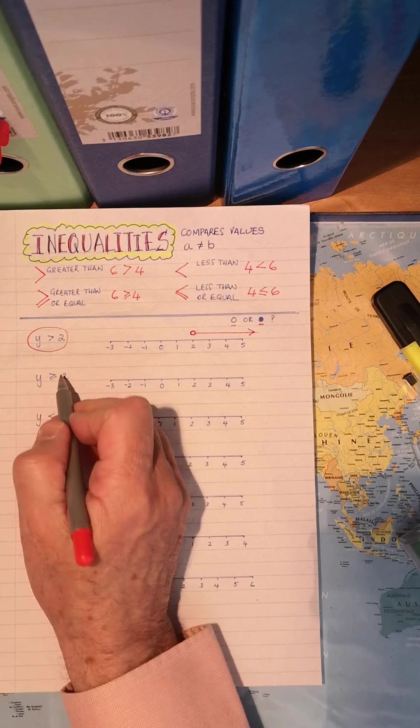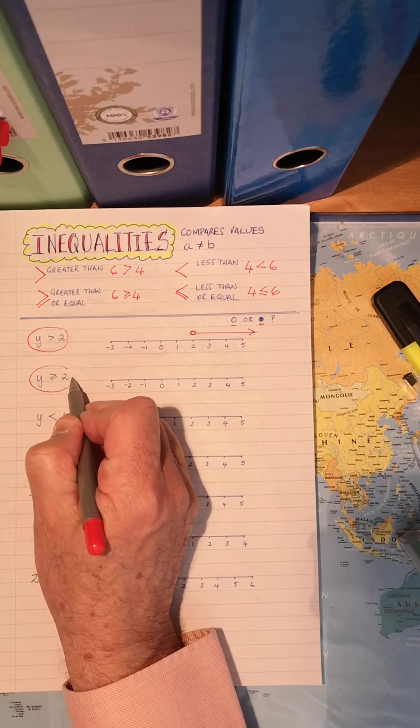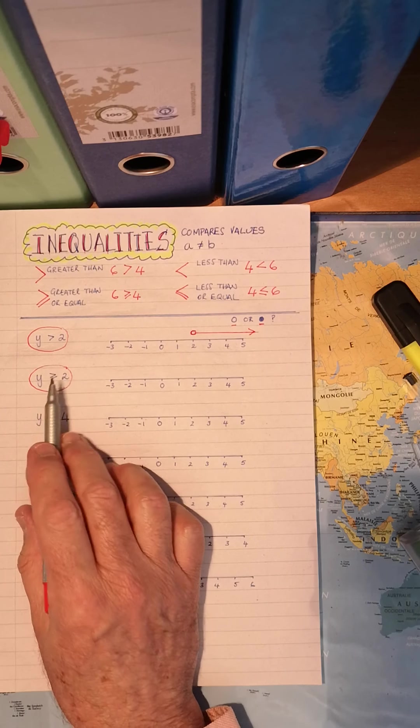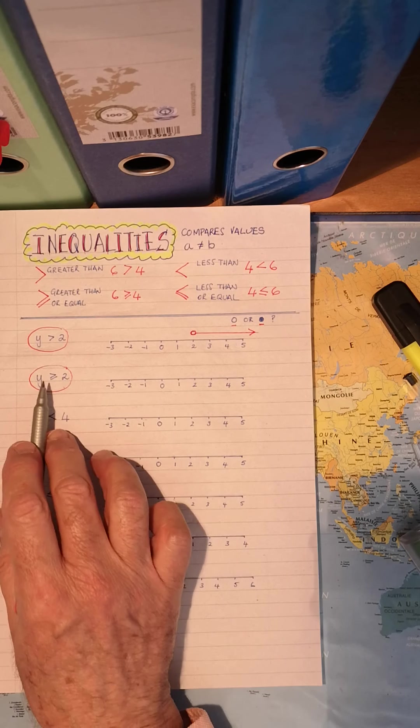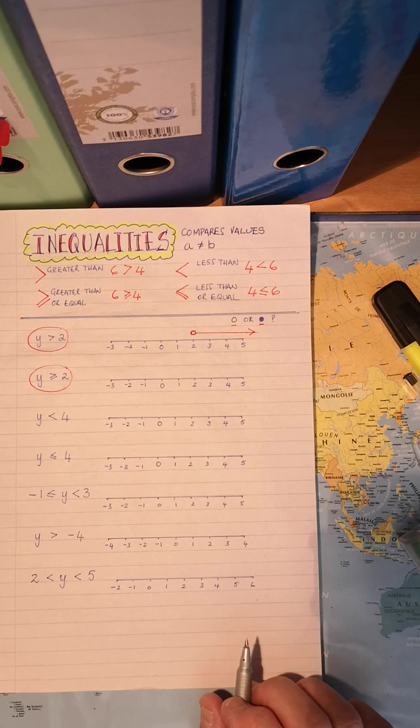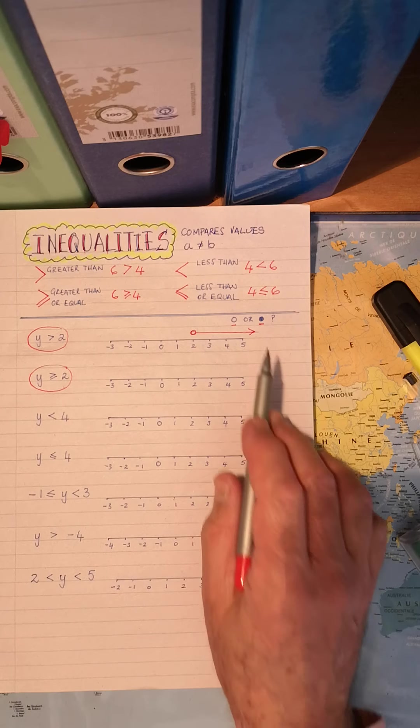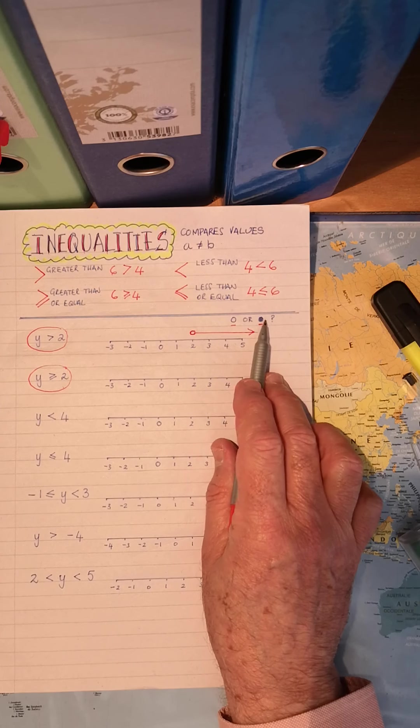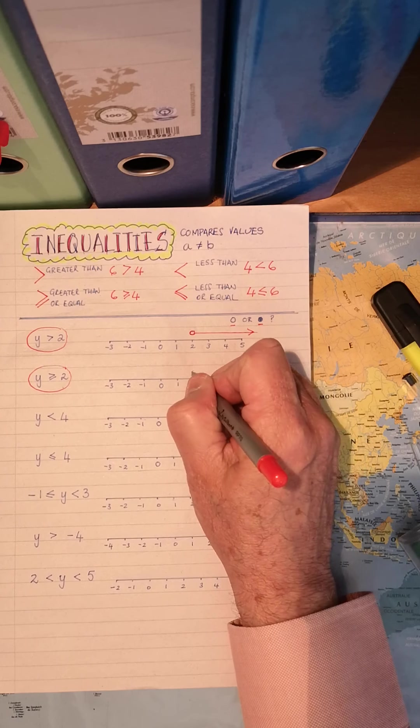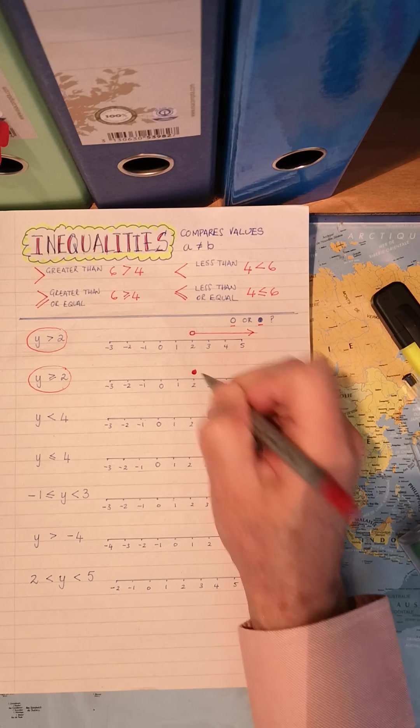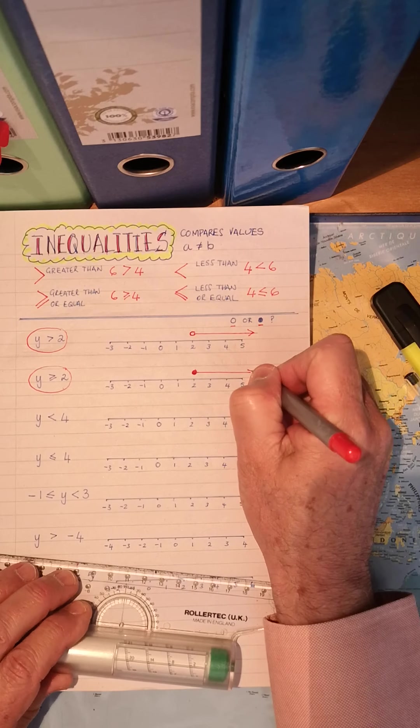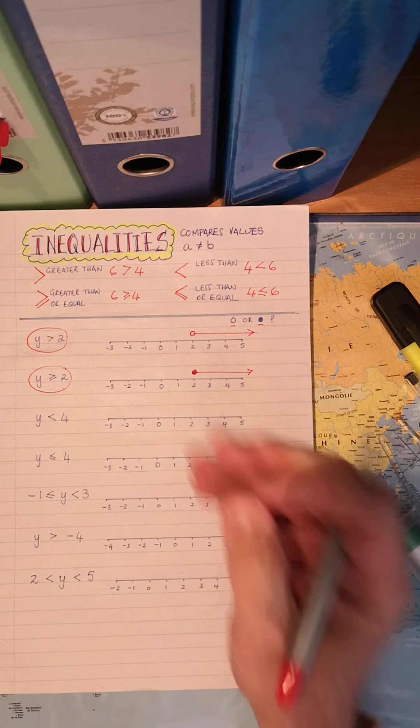Now, Y is bigger than or equal to, larger than, greater than, doesn't matter what word we use. It is bigger. Okay. The Y is bigger than two or equal to two. So go back to that. Open closed. I reckon it's because it's inclusive. It's a closed circle. Right. Continues that way along the number line. Numbers get bigger.